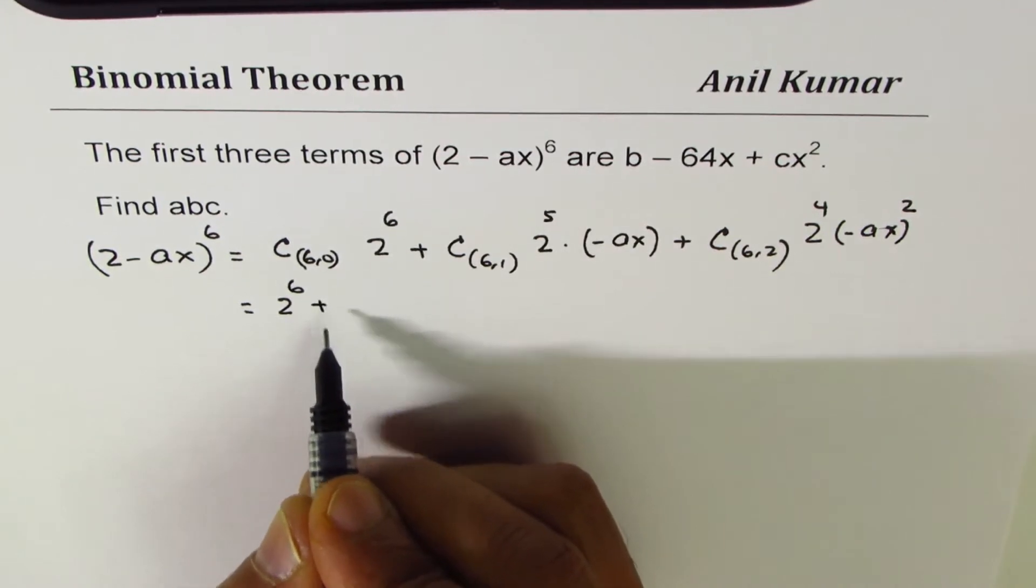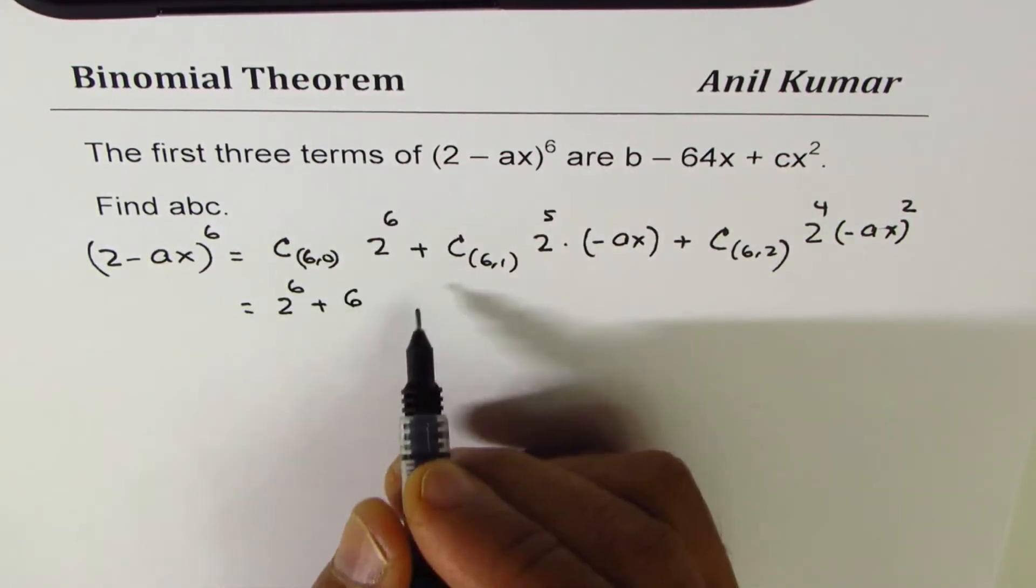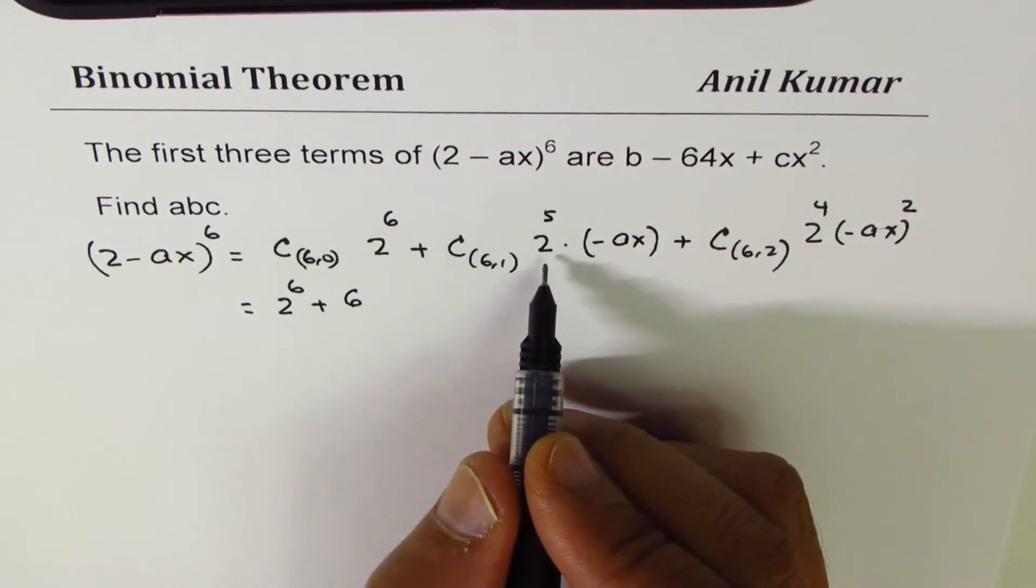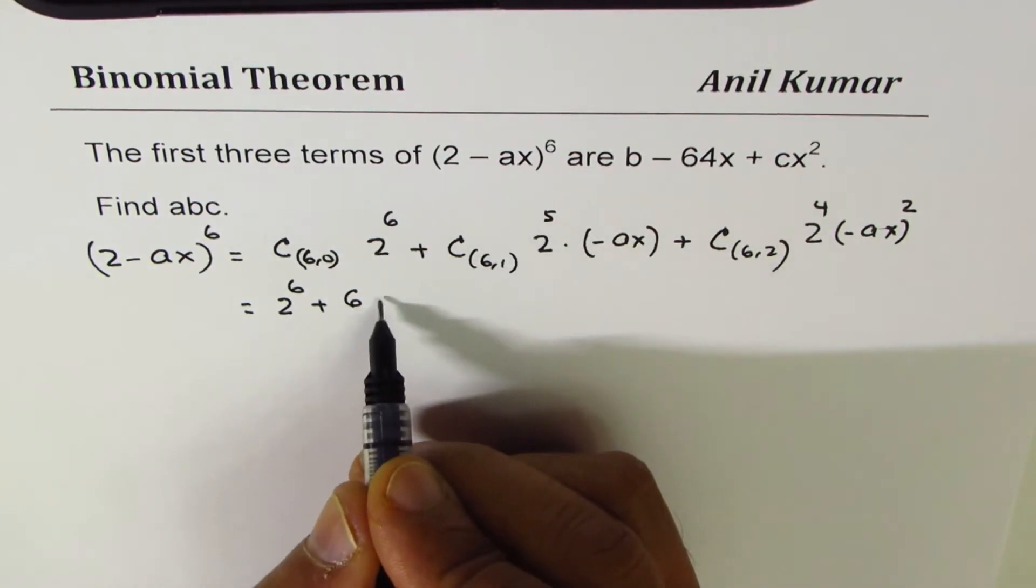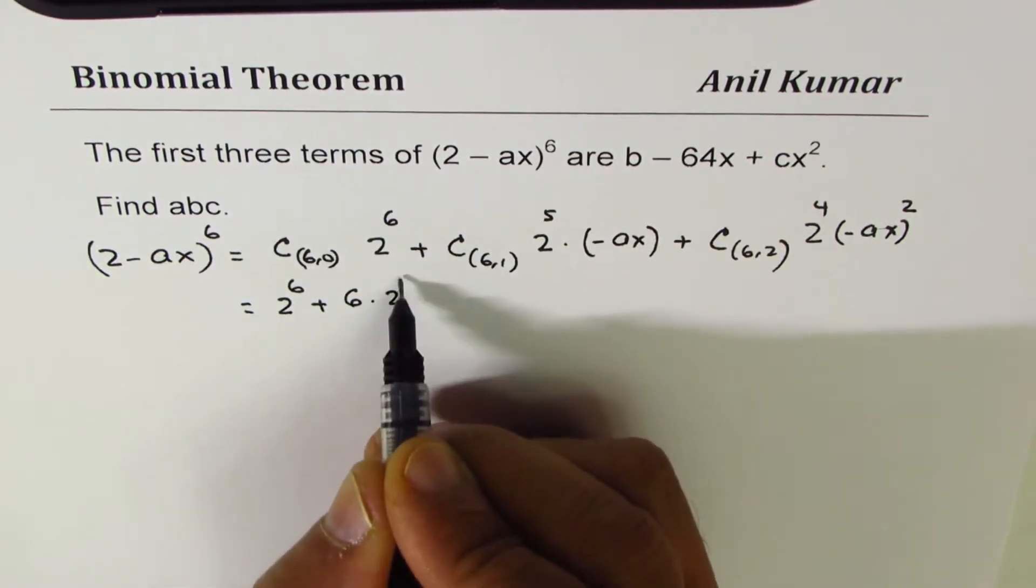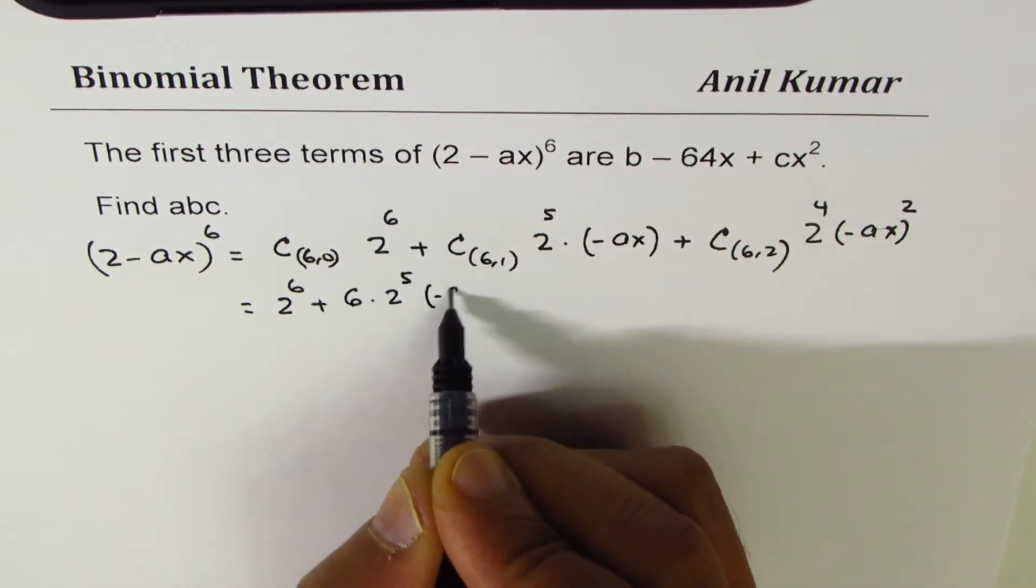Let's simplify this. This is once we get 2^6, and this is 6, so we get +6.